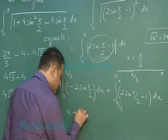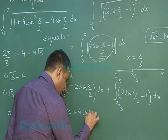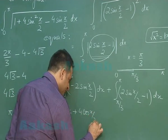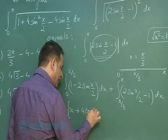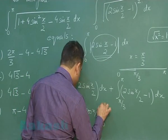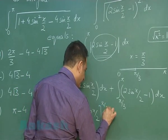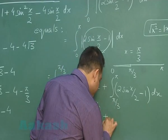Integrating the first part gives x plus 4cos(x/2) with limits from 0 to π/3, and integrating the second part gives minus 4cos(x/2).